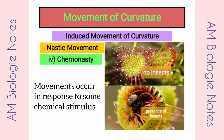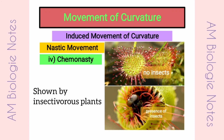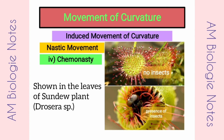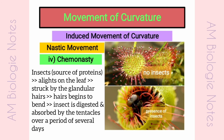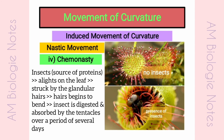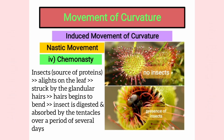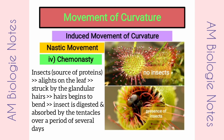Chemonasty: These movements occur in response to some chemical stimulus. This type of movement is shown by insectivorous plants. The best example is shown in the leaves of the sundew plant. When an insect, which is the source of protein, alights on the leaf, it becomes stuck by the glandular hair, and after a few seconds the hair begins to bend. The insect is then digested and absorbed by the tentacles over a period of several days.